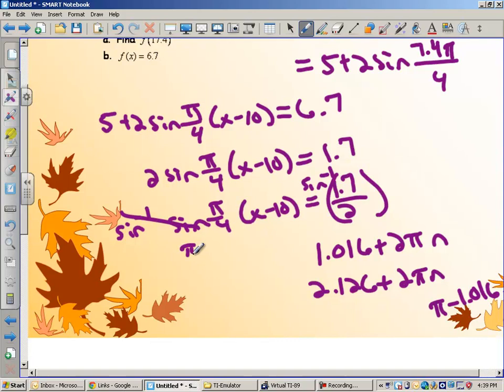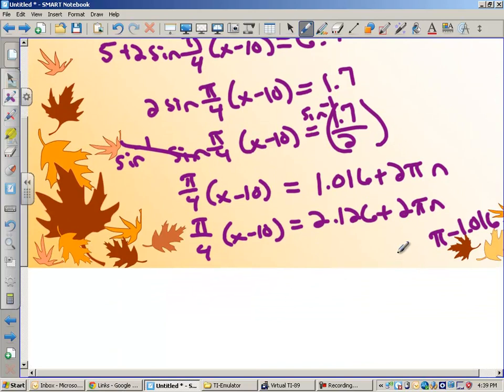So, my equations are pi over 4 times x minus 10 equals that, and then pi over 4 times x minus 10 equals this. I'm going to stop there so that my video doesn't have to be way too long for tonight. You would do the same thing from the arc cosine example from before. You multiply both sides by 4 over pi, distribute through, and find your three solutions. I will see you guys tomorrow.